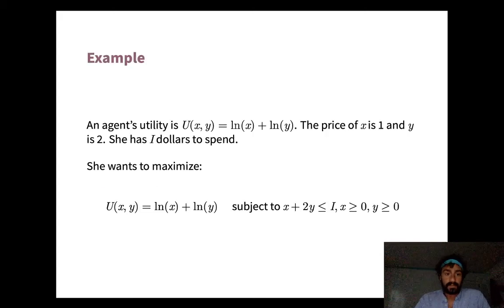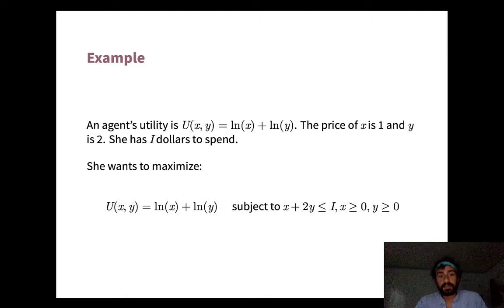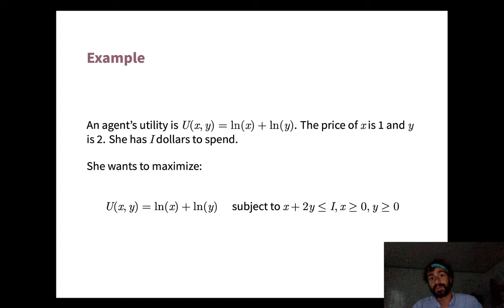Let's take an example. An agent has utility function u(x, y) = log(x) + log(y), working in R^2 with two goods. She faces prices p_x = 1 and p_y = 2, so y is twice as expensive as x, and has income I. The problem is to maximize u subject to x + 2y ≤ I, with x and y both weakly positive — you can consume zero but not negative amounts.